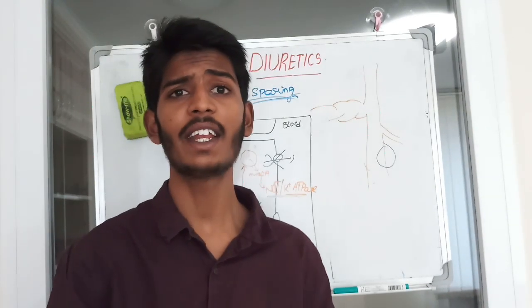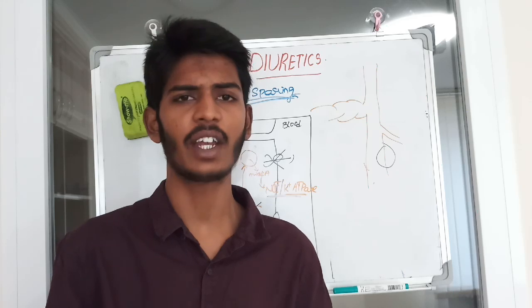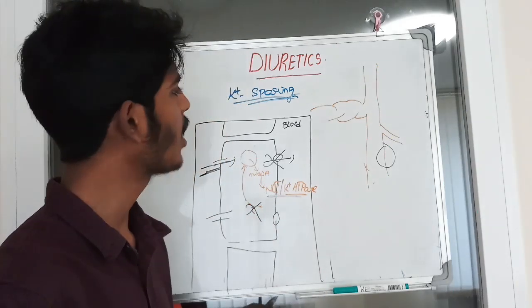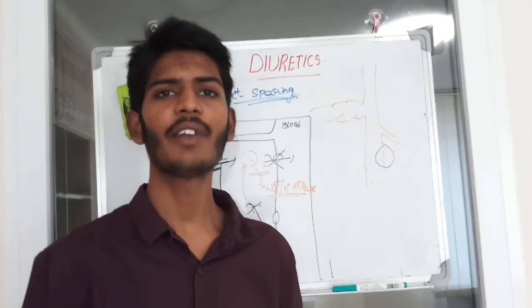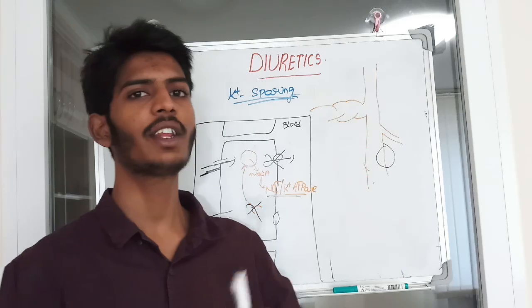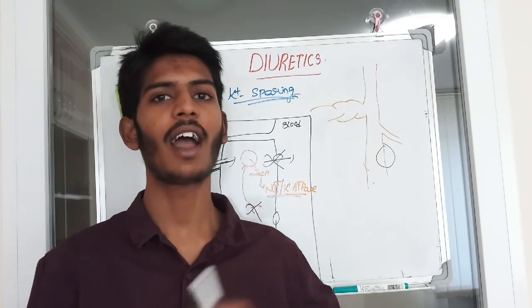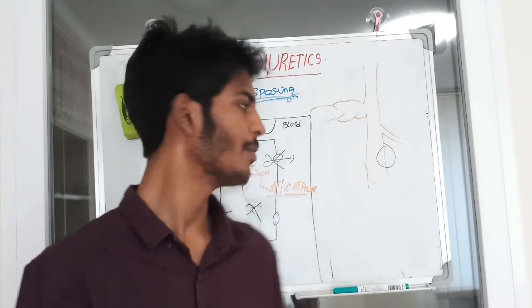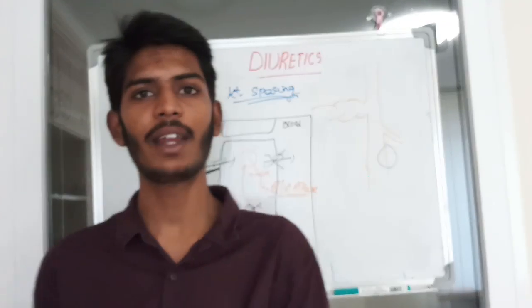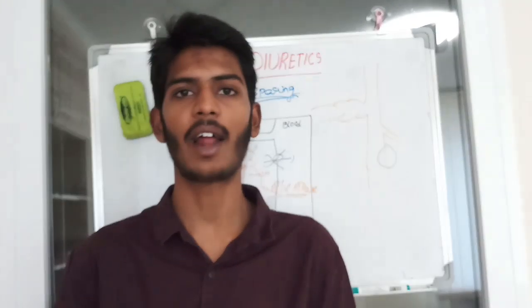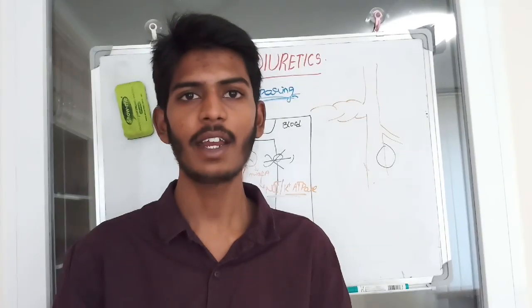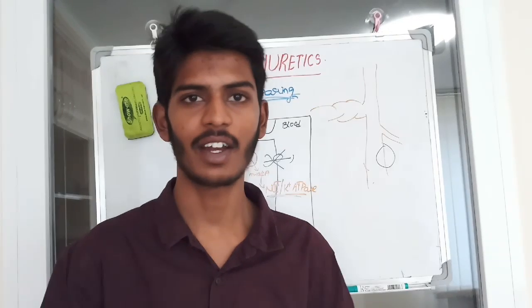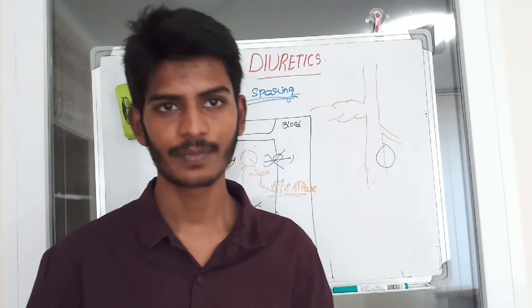The indication for aldosterone antagonists is combination with other drugs, and also for hyperaldosteronism — a condition where aldosterone levels are elevated. Blocking the receptor prevents excessive sodium retention. This concludes our discussion of diuretics. Thank you for following.